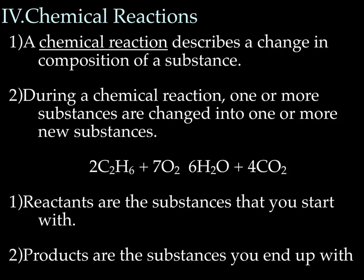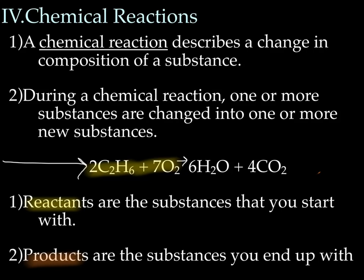A chemical reaction describes a change in composition of a substance. During a chemical reaction, one or more substances is changed into one or more new substances. We have a chemical equation here that represents a chemical reaction. Two terms you need to know: reactants are the things you start with — in this case we start with two C2H6s and seven O2s. Products are the things you end up with — by mixing the C2H6 and O2, we end up with six waters and six carbon dioxides. You can see this is definitely a chemical change: we start with something, they interact, and we end up with something totally new.